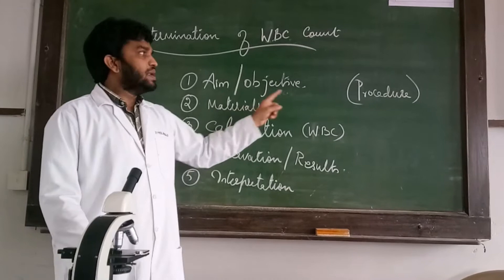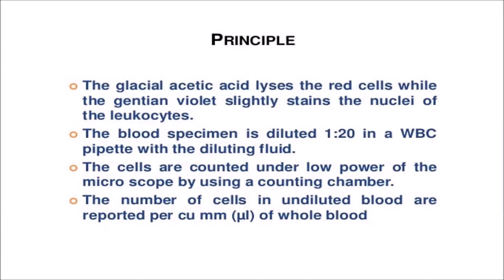So we will start this particular procedure now. This is our principle. The glacial acetic acid lyses the red cells while the gentian violet slightly stains the nuclei of our WBC. The blood specimen is diluted 1:20 in WBC pipette with the diluting fluid. The cells are counted under low power of the microscope by using a counting chamber, i.e. improved Neubauer chamber. The number of cells in undiluted blood are reported per cubic mm or microliter of whole blood.